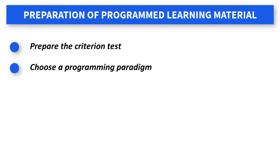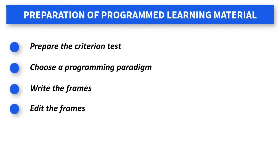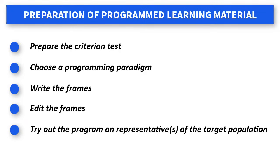You prepare all those multiple choice questions and then you choose a programming paradigm — whether Skinnerian, which is the linear, or the branching one, which is the Crowderian. Then you write the frames, making use of psychological and pedagogical principles. Then you edit the frames, making use of comments from knowledgeable colleagues — validating the content with relevant people who have read through the frames. Finally, you try out the program on representatives of the target population before certifying that it is ready for the group you have prepared it for.